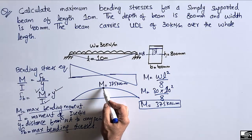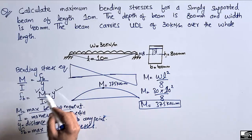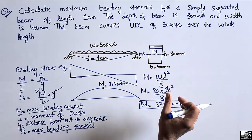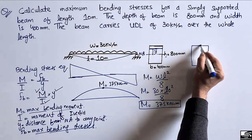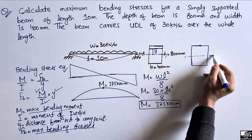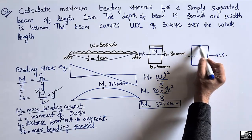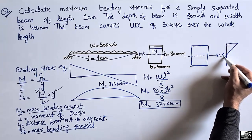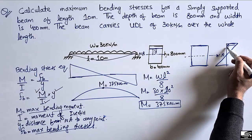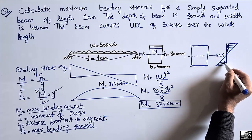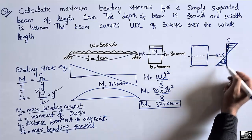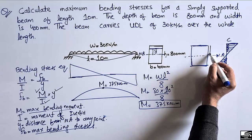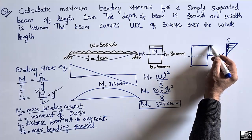This maximum bending moment of 375 kN·m acts at the mid-span of the beam. For maximum bending stresses, y is taken to the extreme fiber of the beam. Looking at the cross-section with its neutral axis, the maximum stresses always occur at the extreme portions — compressive stresses at the top and tensile stresses at the bottom.